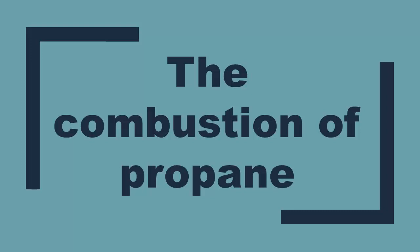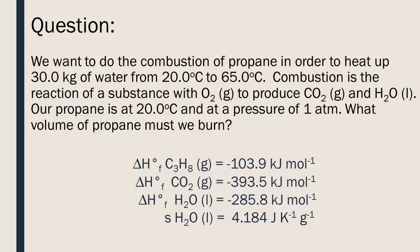The combustion of propane. We want to do the combustion of propane in order to heat up 30 kg of water from 20 degrees Celsius to 65 degrees Celsius. Combustion is the reaction of a substance with oxygen to produce carbon dioxide and water. Our propane is at 20 degrees Celsius and at a pressure of 1 atmosphere. What volume of propane must we burn?